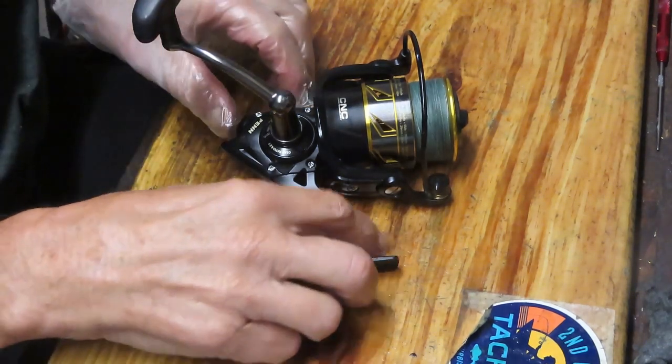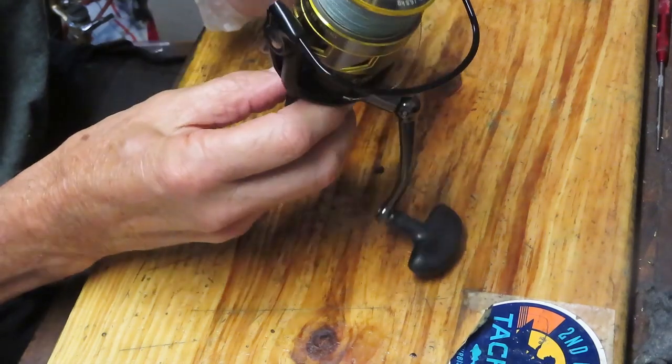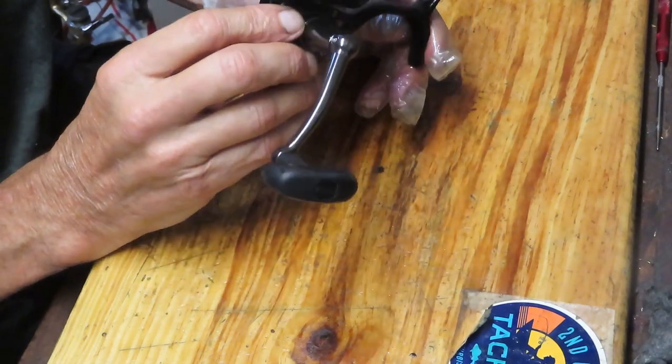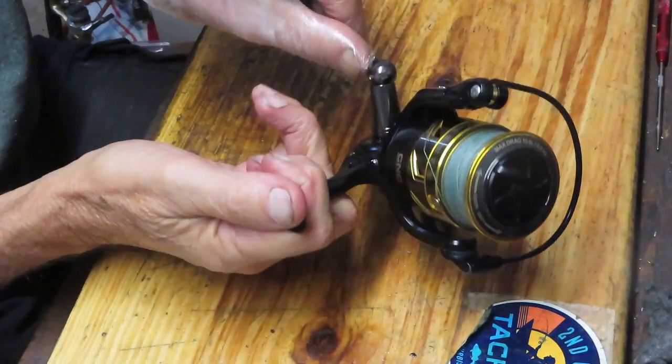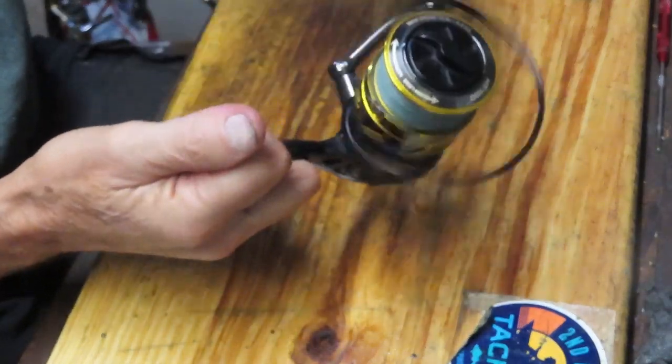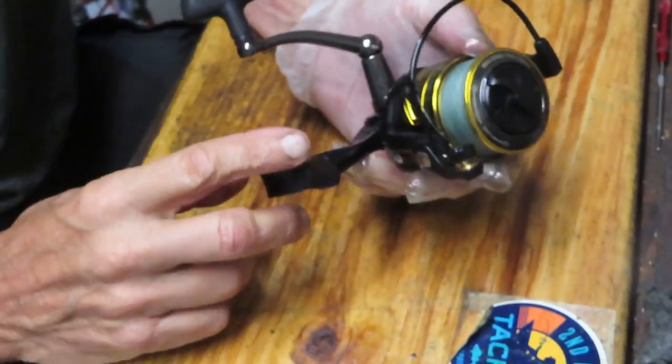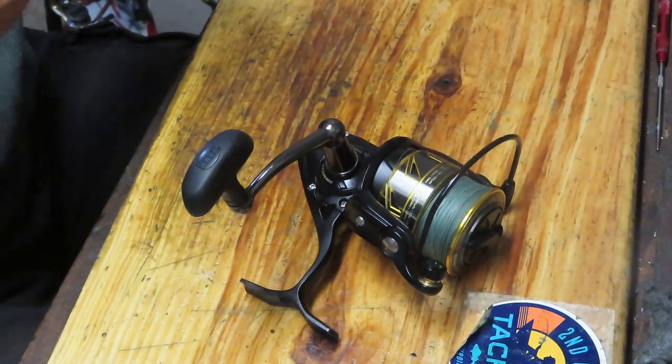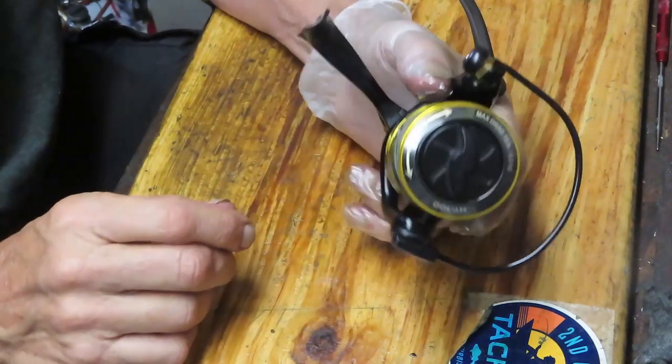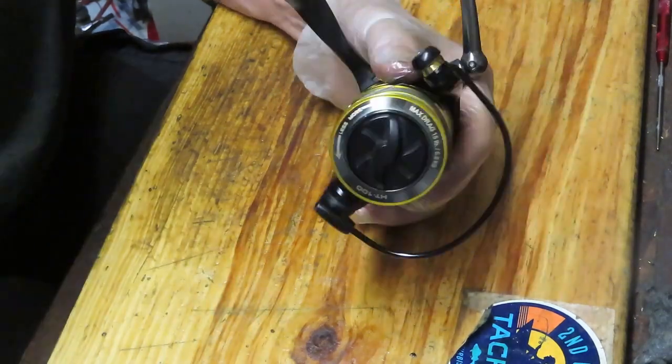Hi, this is Dennis with Second Chance Tackle. Today we've got the opportunity to try and figure out what's going on with this Penn Battle III 4000. It is sticking. You can see it's quite an effort while it's not even going there. Something is very unusual about this reel. We're not sure if we're going to be able to solve this one during this video. This may wind up being a problem diagnosis one, or maybe we'll get lucky and we'll figure it out.